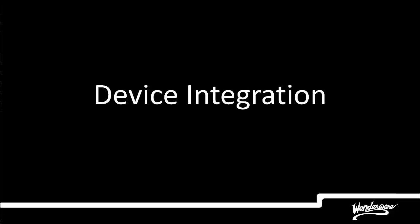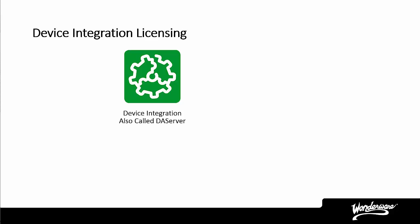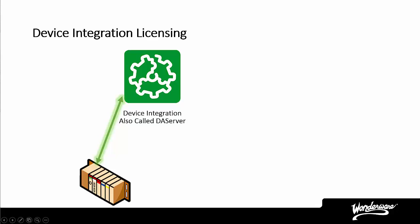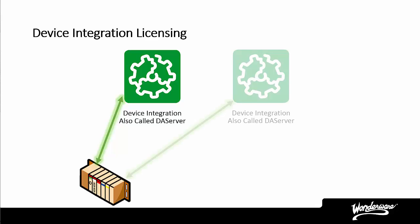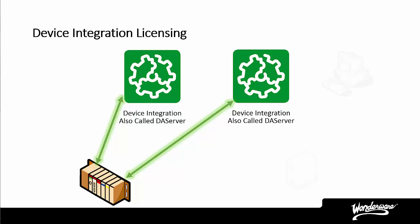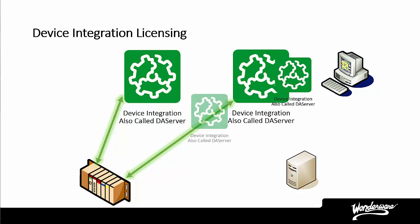The next software product we will discuss is the Wonderware Device Integration Servers, also called Data Access Servers or DA Servers. These DA Servers allow the Wonderware software to communicate to the PLCs and devices in the system. There are many different DA Servers because there are different PLCs and device vendors, most using different communications protocols. You can have multiple DA Servers in your application if communicating to different vendors or protocols, and you may also have two DA Servers of the same type to provide redundancy or failover. Each computer where a DA Server is installed must have a device integration license; however, one device integration license can enable multiple DA Servers on one computer.